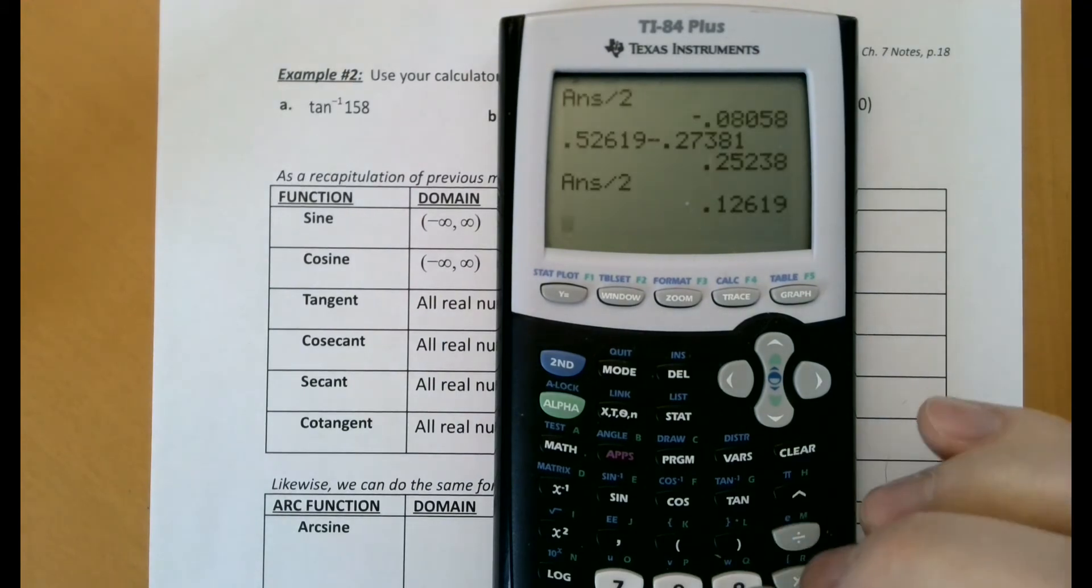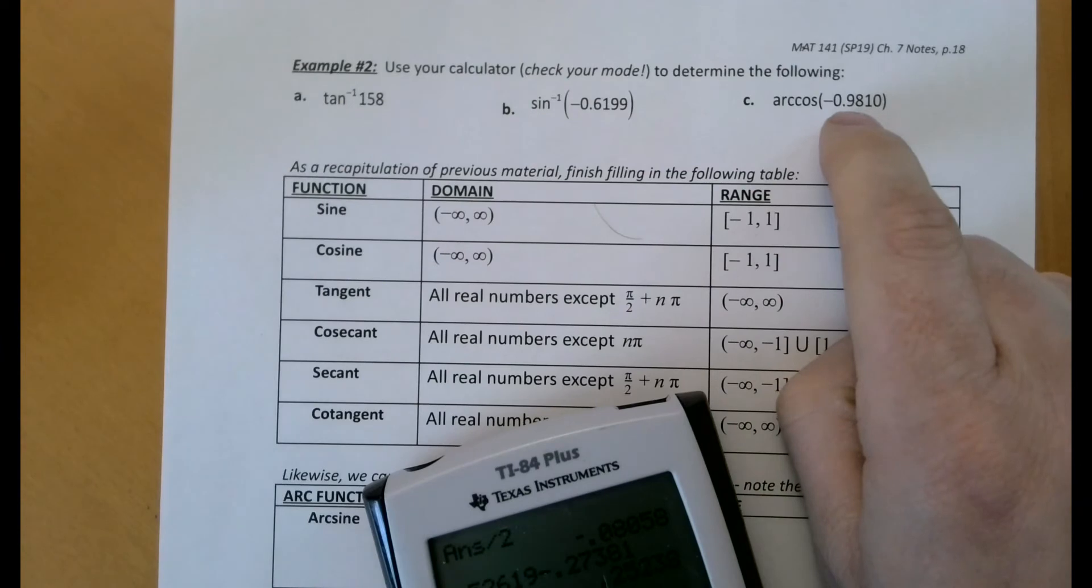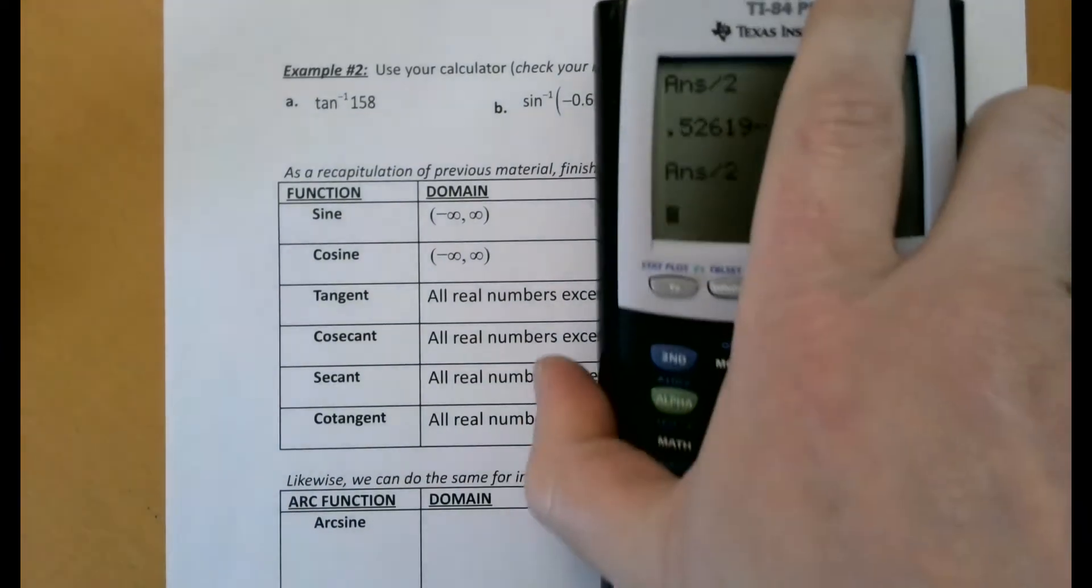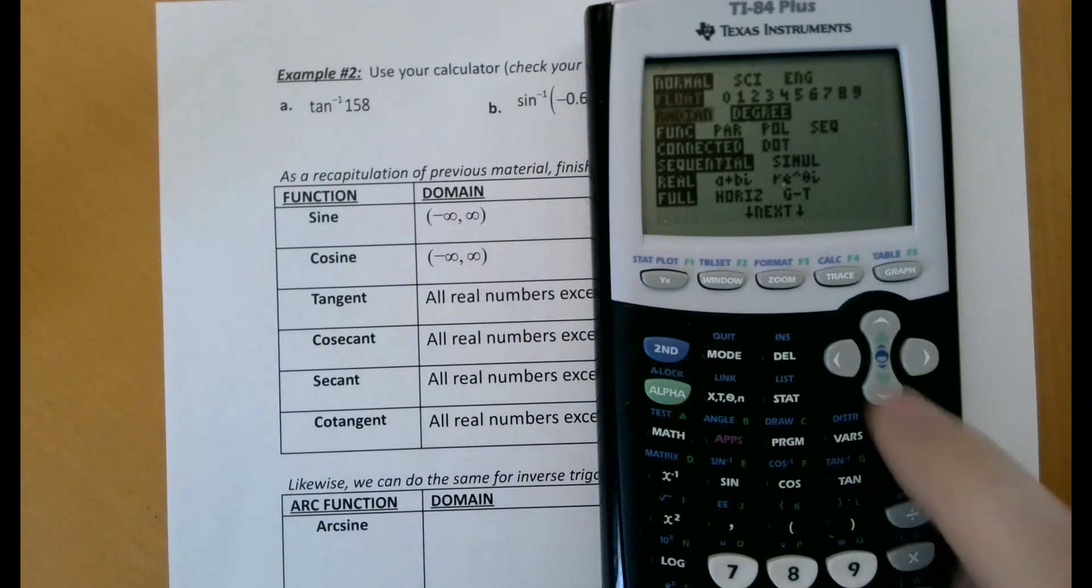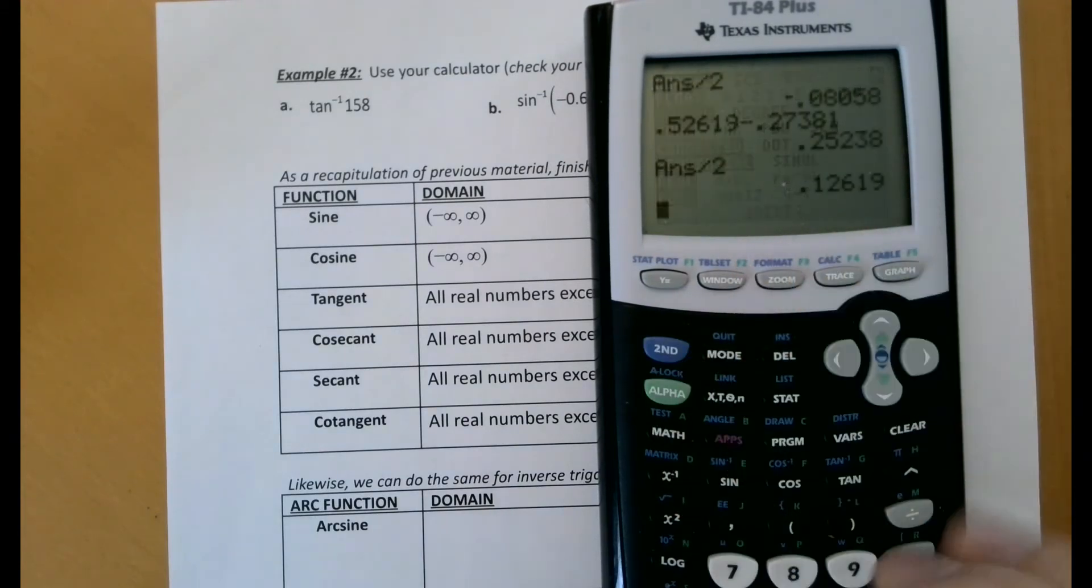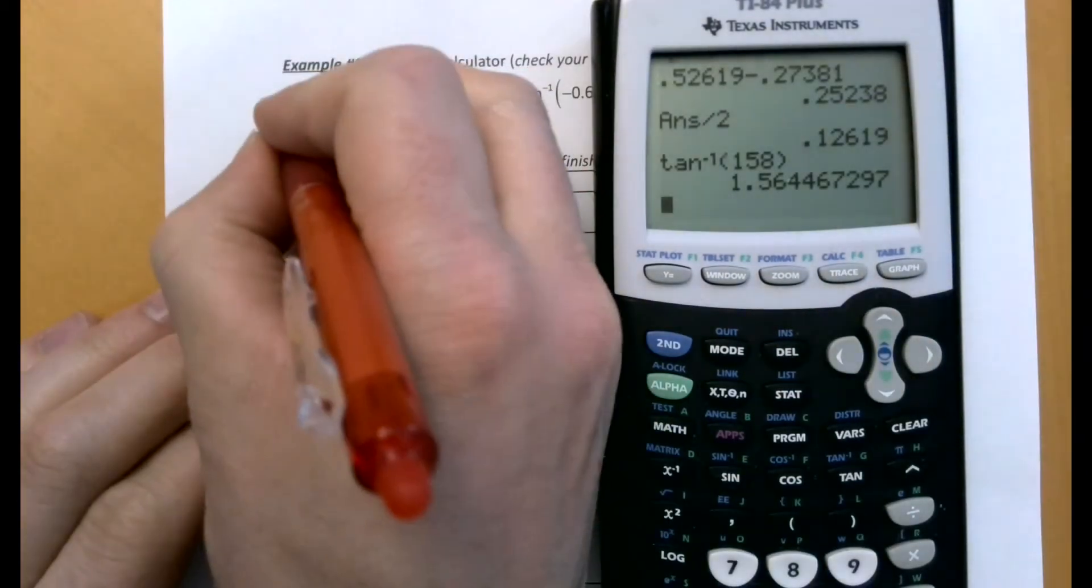What you need to make sure first is that you're in radians or degrees. It doesn't matter in this case. So I'm going to go under mode, I'm in degrees, I'm going to go ahead and change it to radians. And then second tan gives me tan inverse of 158 equals 1.56 radians.